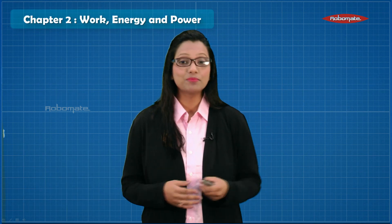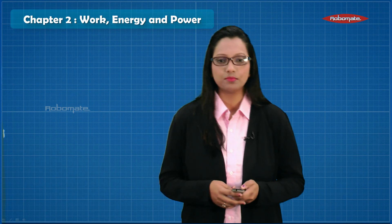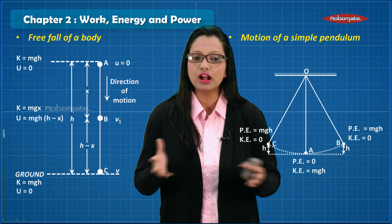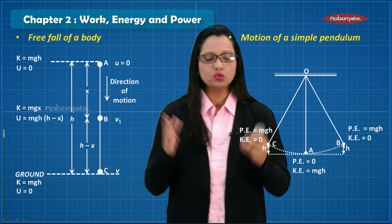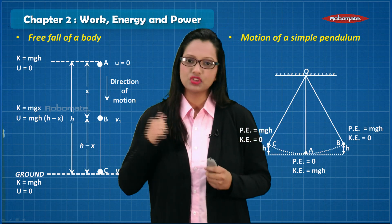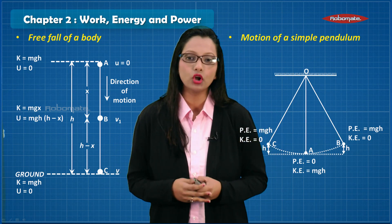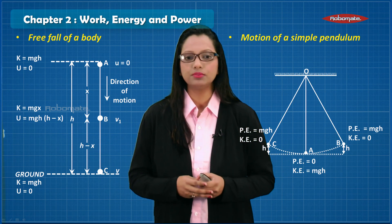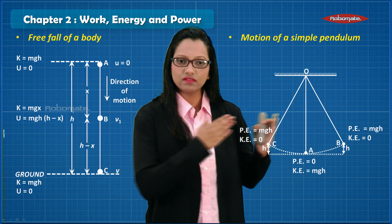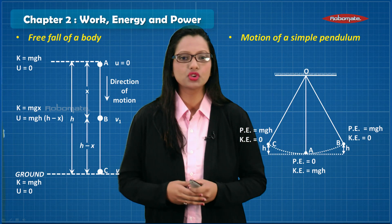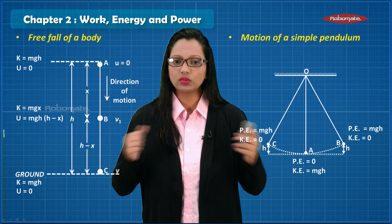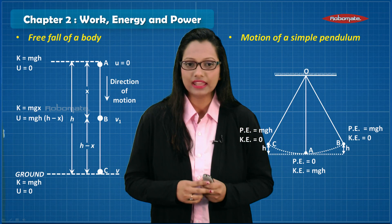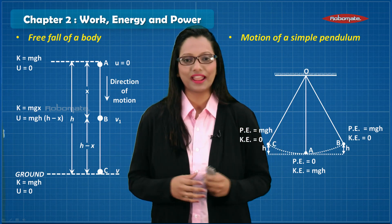The next chapter is Work, Energy and Power. In this chapter there's not much drawing — you just have two diagrams: the free fall of a body, which supports your theory on KE + PE = constant, and the motion of a simple pendulum. Since there's not much drawing, all you need to take care of is just the markings on the diagram.